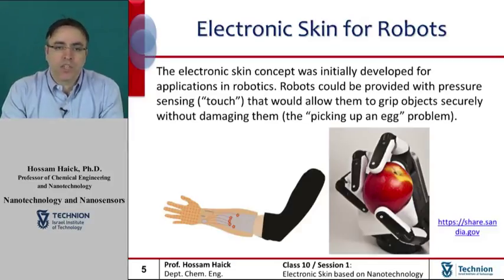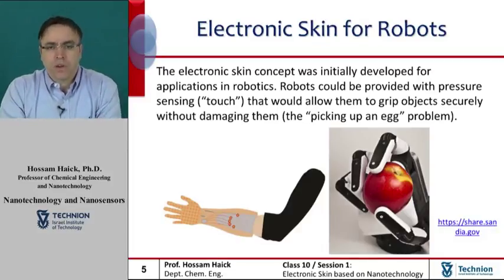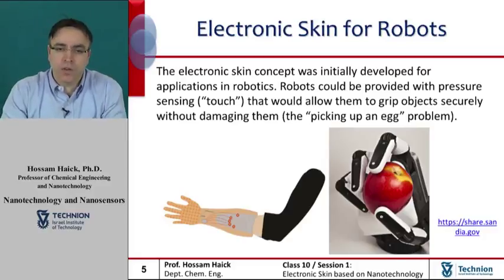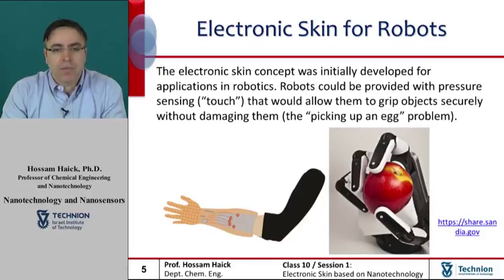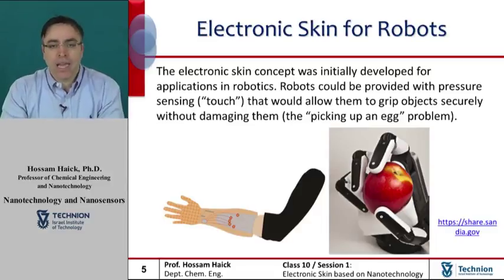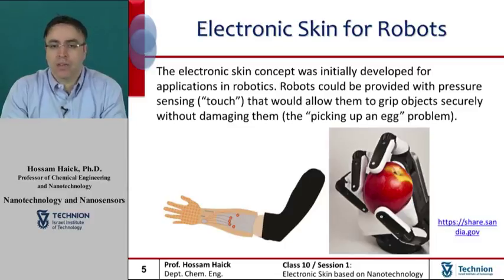The electronic skin concept was initially developed for applications in robotics. Robots could be provided with pressure sensing, or touch, that would allow them to grip objects securely without damaging them. The most simple action for a human can be extremely complex for robots. One example is the picking-up-an-egg problem, where a robot with no sense of touch has to apply a specific force on the egg in order to pick it up without dropping it or breaking it.